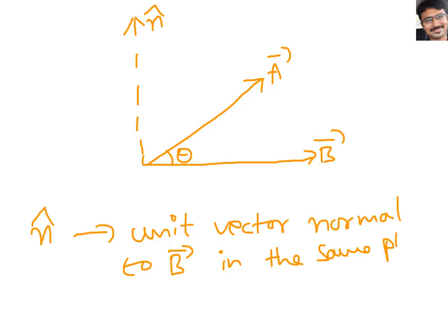N cap is nothing but a unit vector normal to B bar, perpendicular to B bar, in the same plane. This is the given information. Now, resolving A bar: it makes angle theta with B bar, so the component along B bar is A cos theta, and the component perpendicular to B bar is A sin theta.